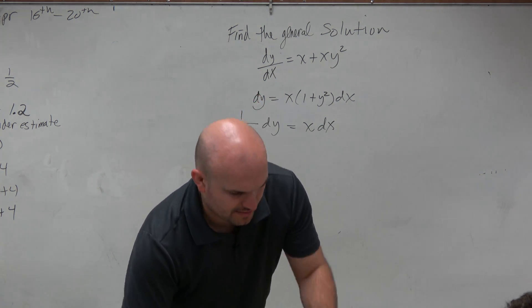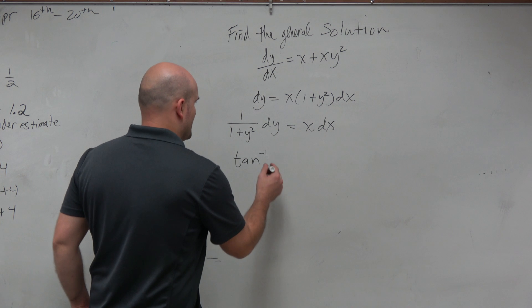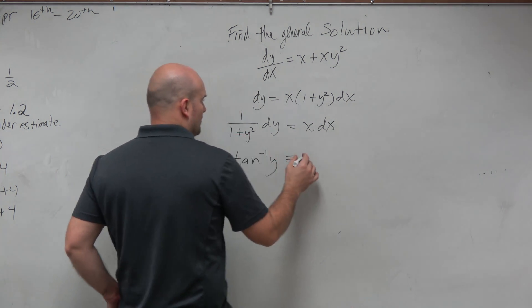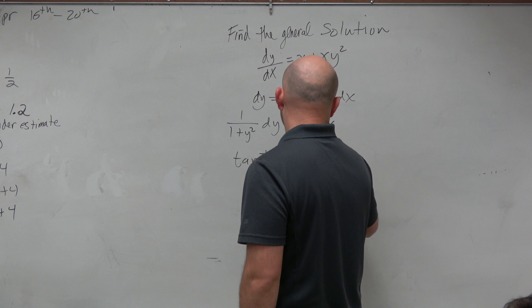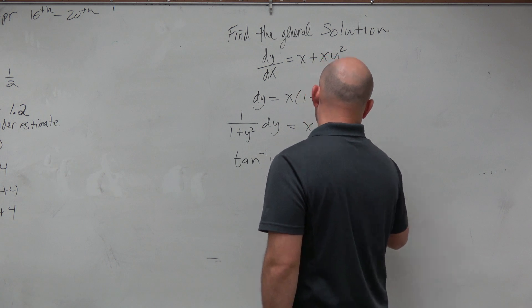So I have tan inverse of y, because that's in terms of y, and then this is going to be 1 half x squared and then plus big C.